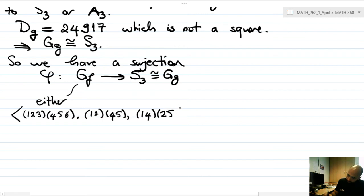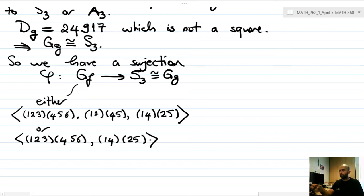Or (1 2 3)(4 5 6) and (1 4)(2 5). Now we have to be a little bit careful about what this means, right? So here the letters signify the roots of the sextic. In S_3, the letters that are permuted correspond to these alpha plus one over alphas, right?